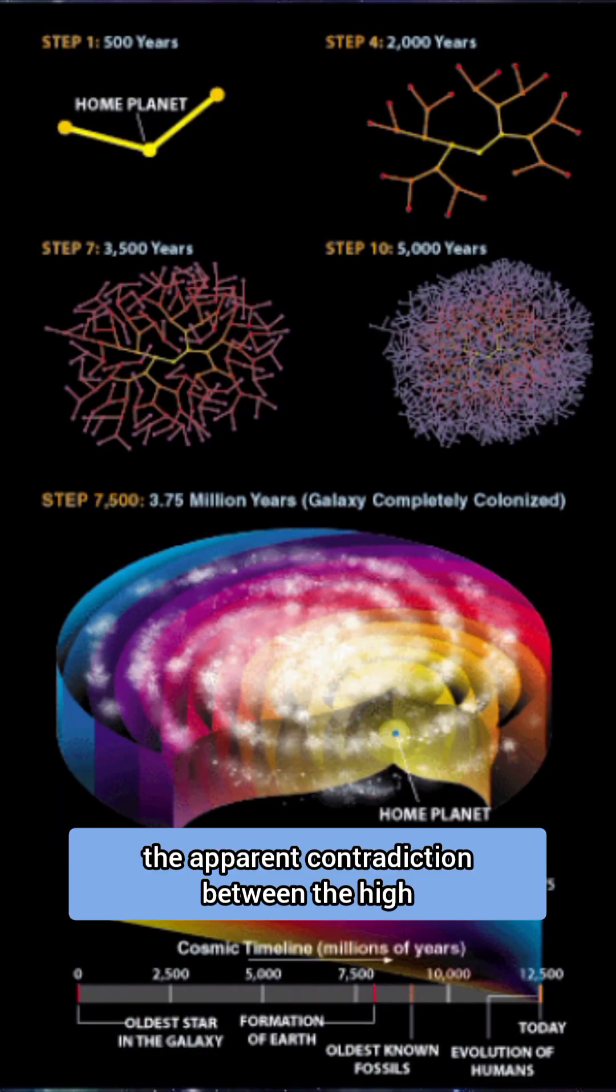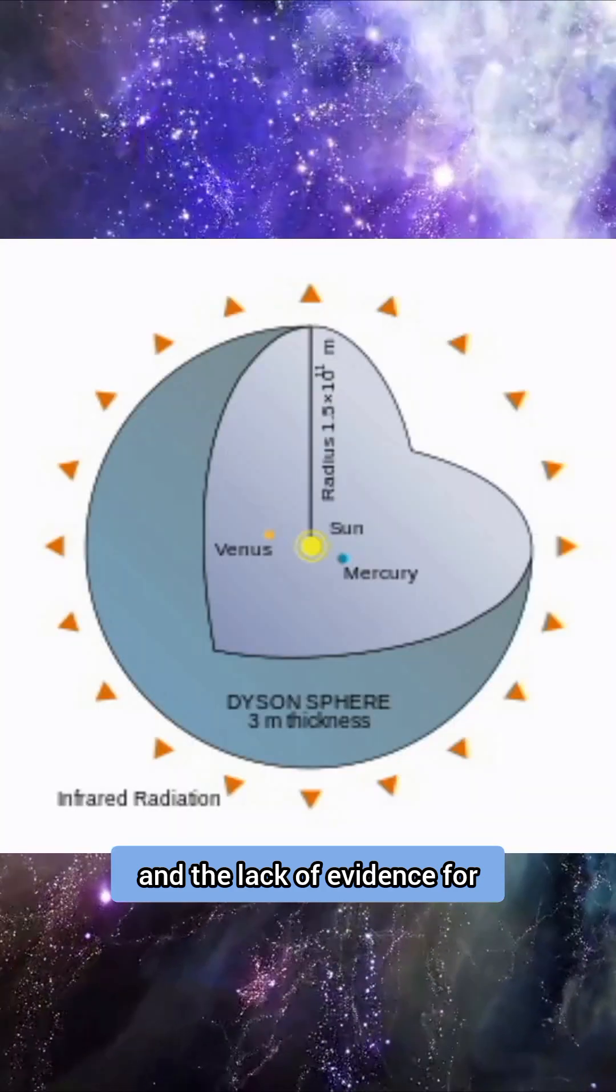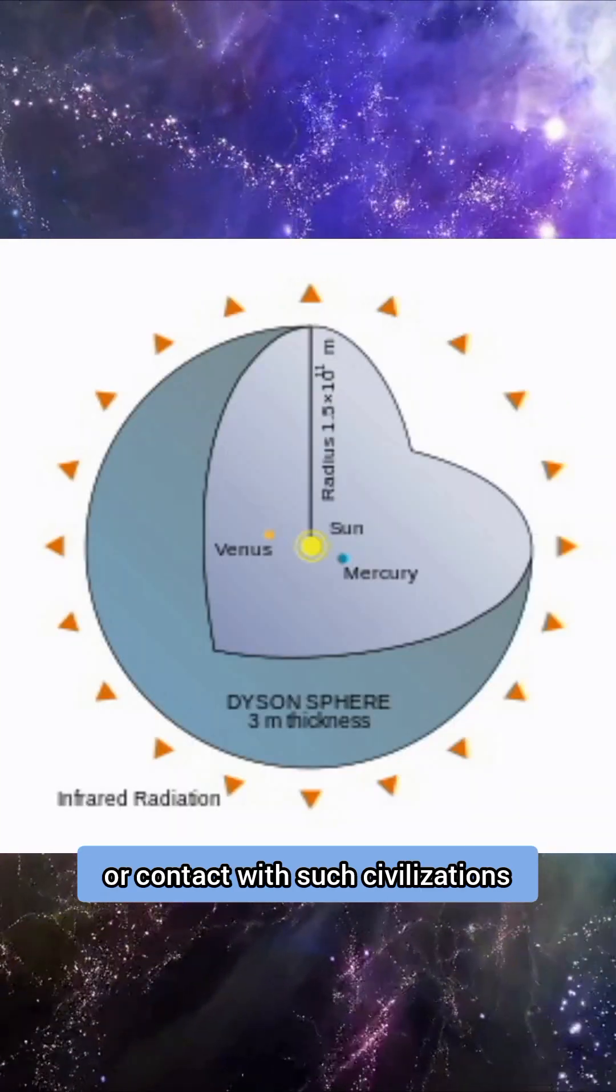The Fermi Paradox discusses the apparent contradiction between the high probability of extraterrestrial civilizations existing and the lack of evidence for or contact with such civilizations.